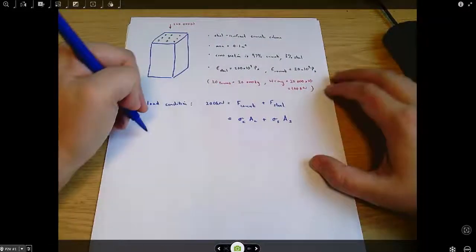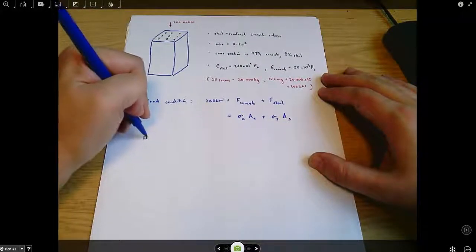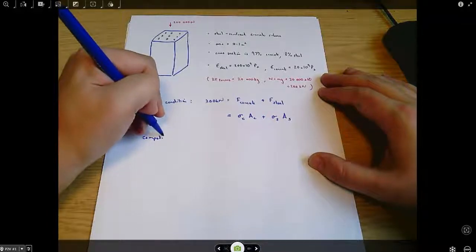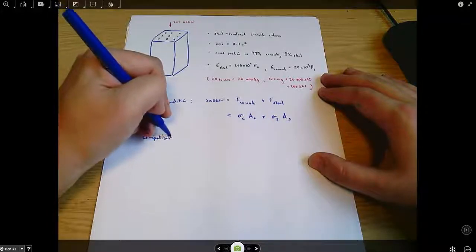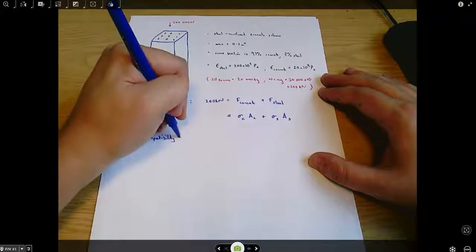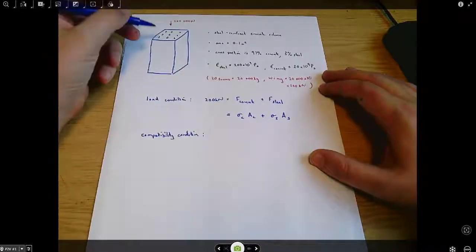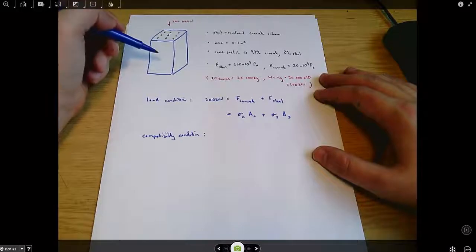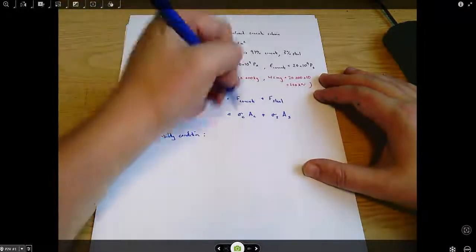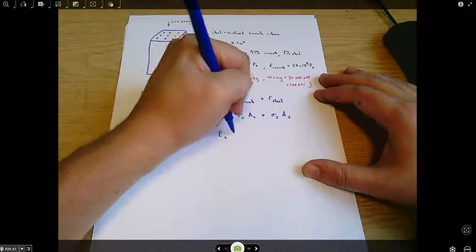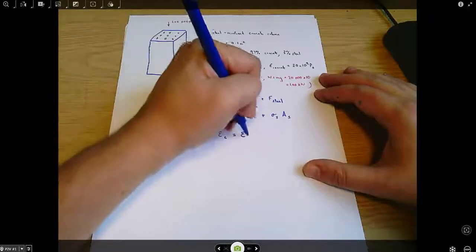And then the second thing we can do is what's called the compatibility condition. And that says the concrete and the steel move together. They're not sliding against each other, and that means that the strain in the concrete must equal the strain in the steel.